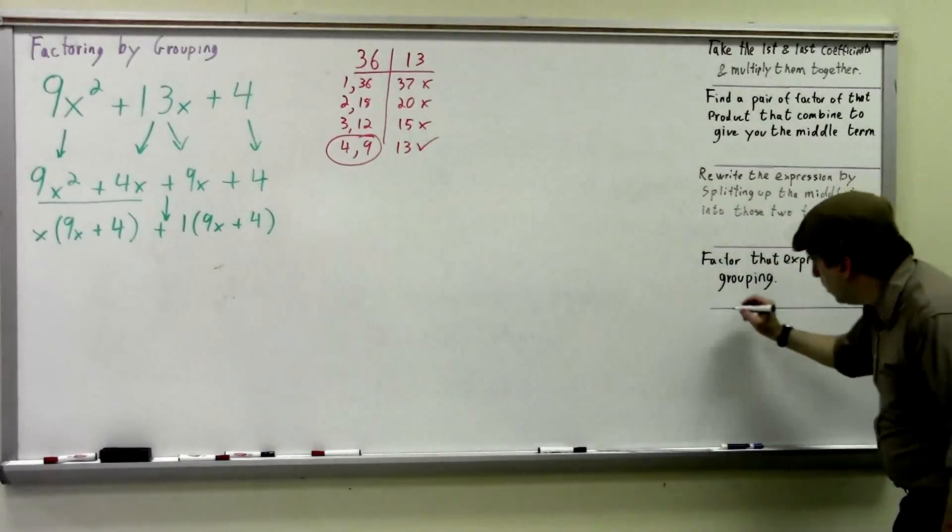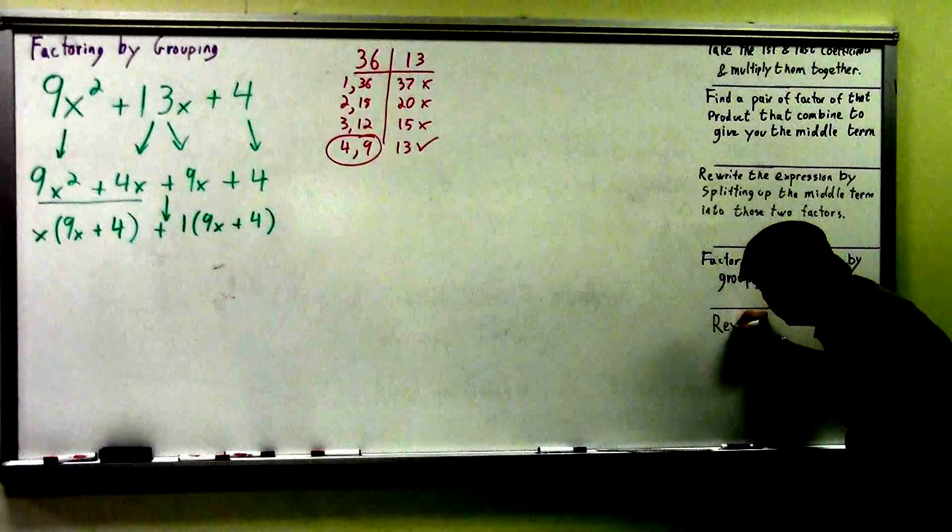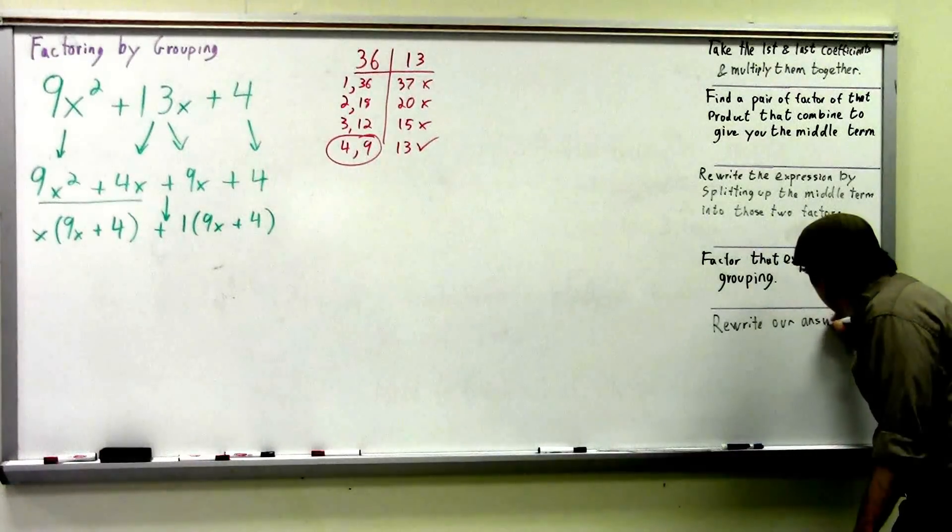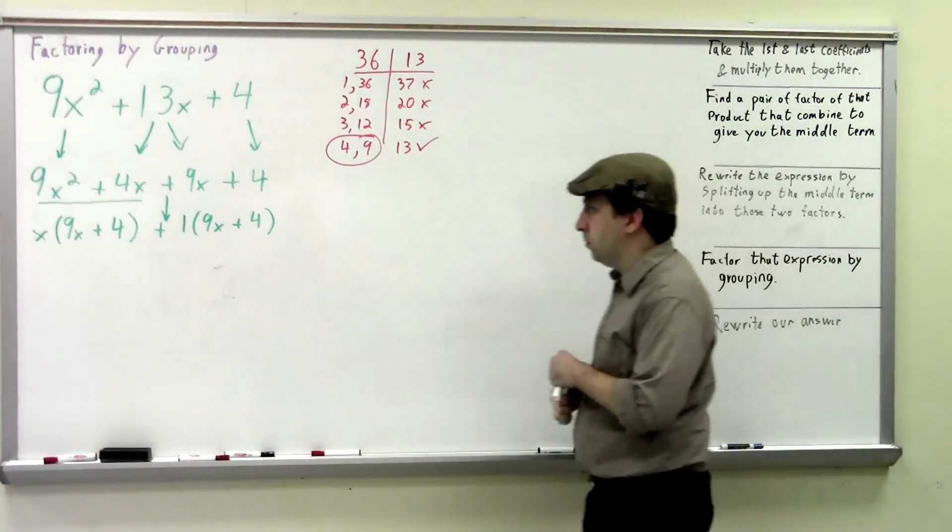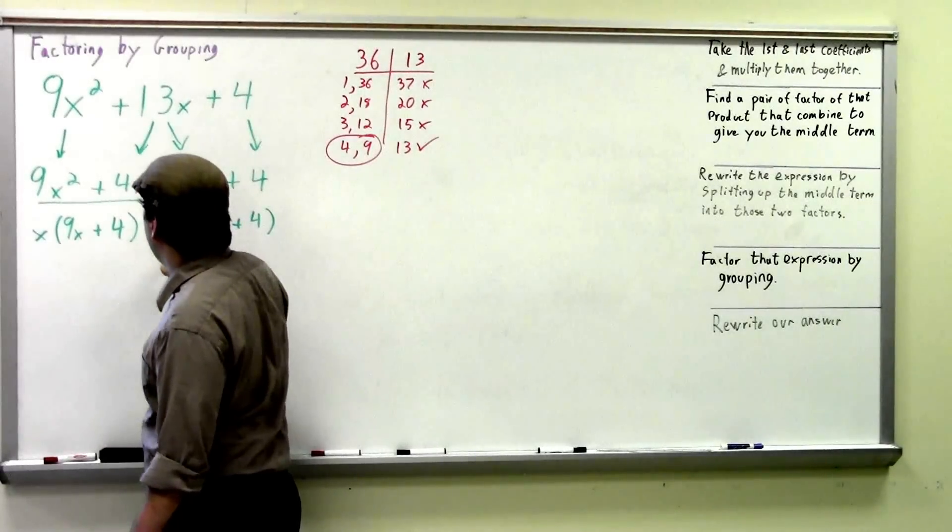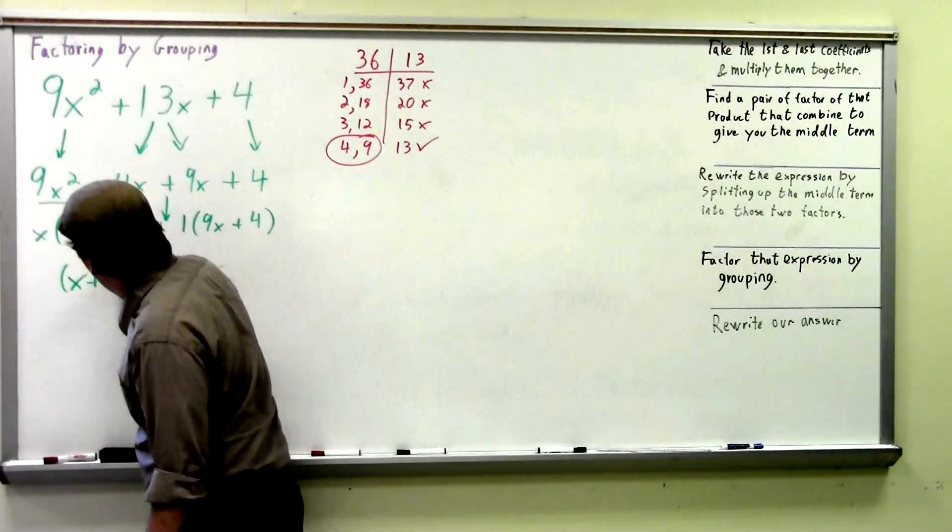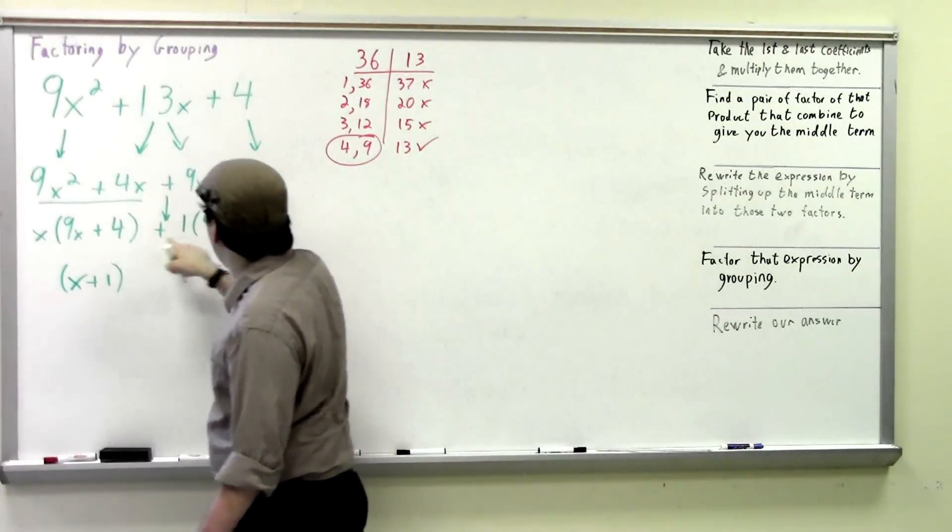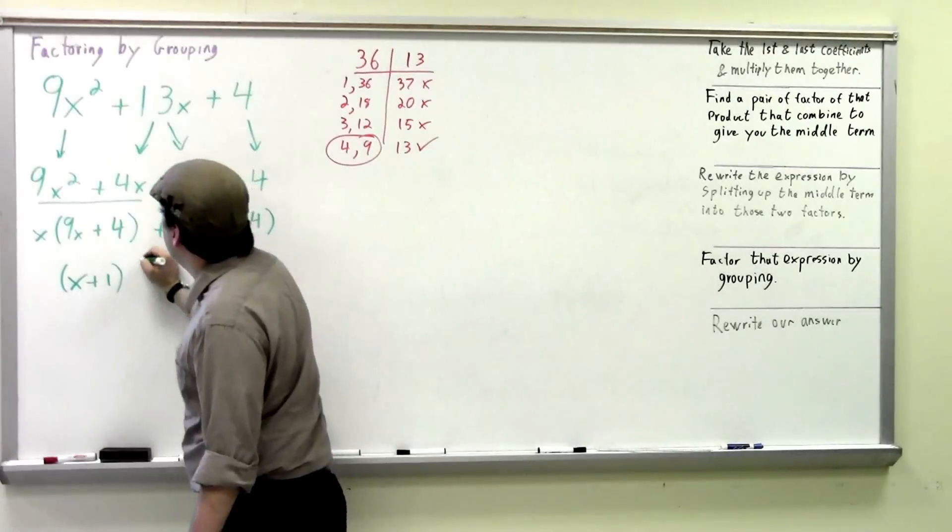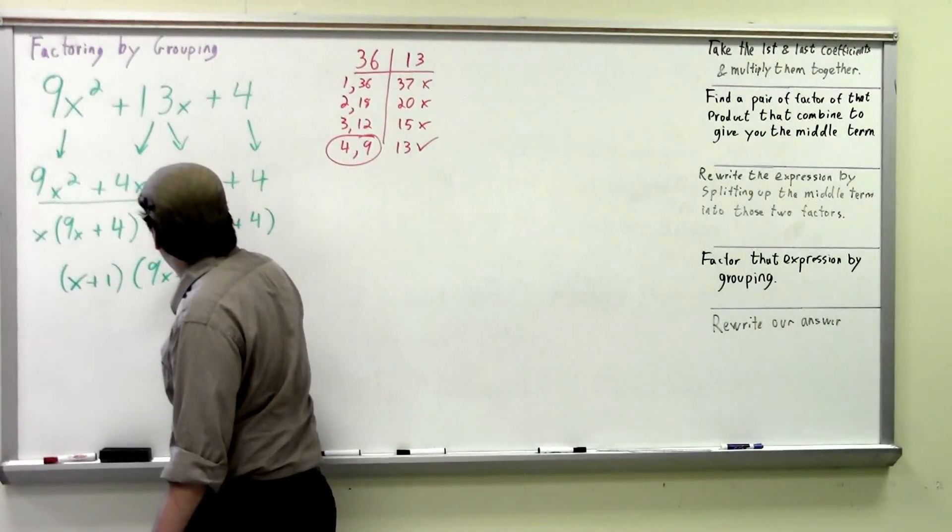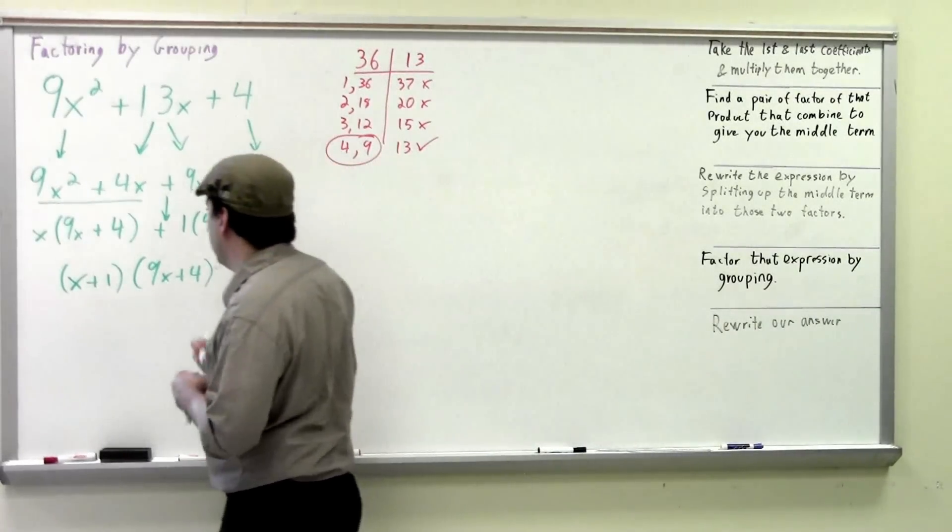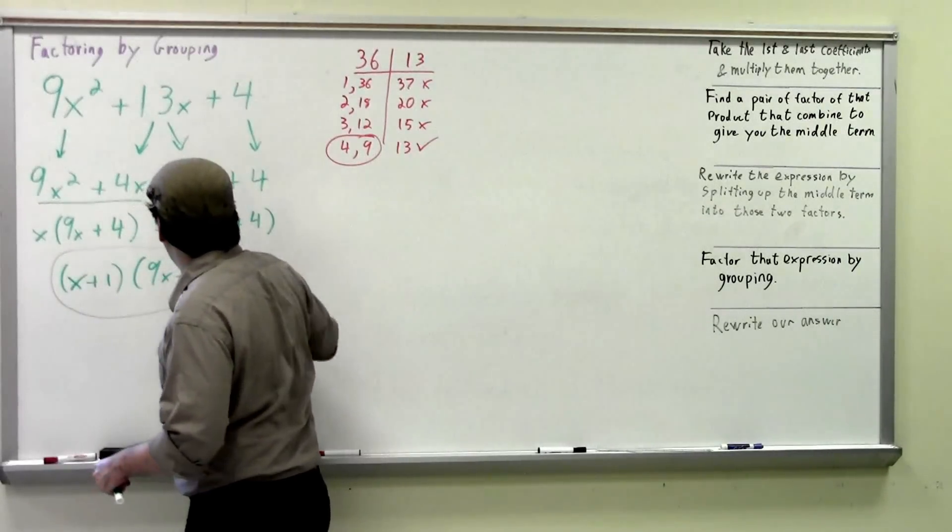Our last step is to rewrite our answer. So we're going to write these two guys together. These coefficients in front of our parentheses are going to be our first factor. So that's going to be x plus 1. And this should match this if you've done it correctly. If it doesn't, you've done something wrong. But this is our second factor. That's going to be 9x plus 4. And that's your answer.